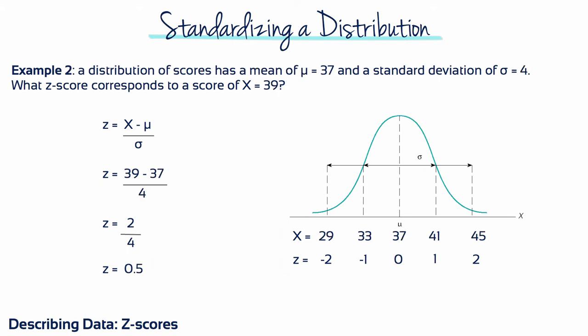Example 2: A distribution of scores has a mean of 37 and a standard deviation of 4. 39 minus 37 divided by 4 equals a z-score of 0.5.